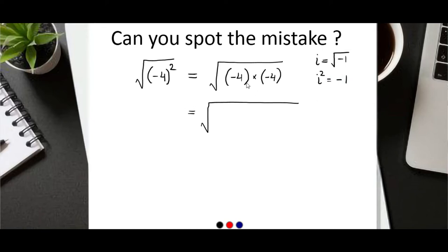How? See, we can write minus 4 as 4i squared. Now we can split them like this: square root of 4i squared can be written as 2i times 2i.